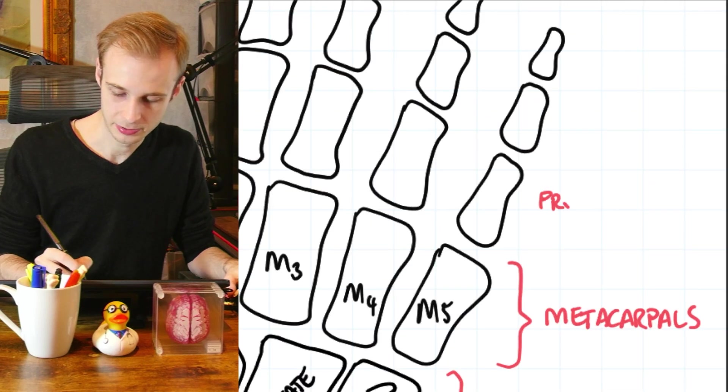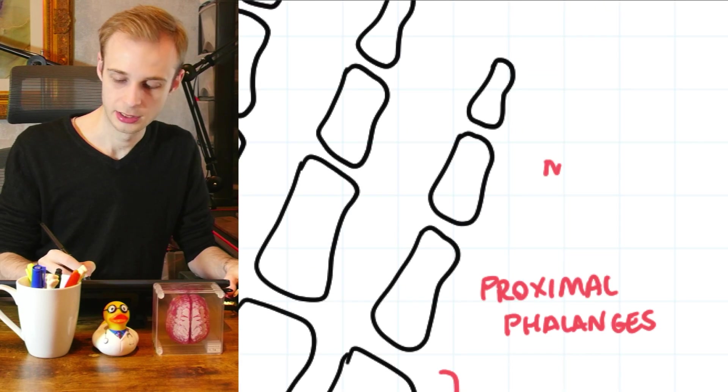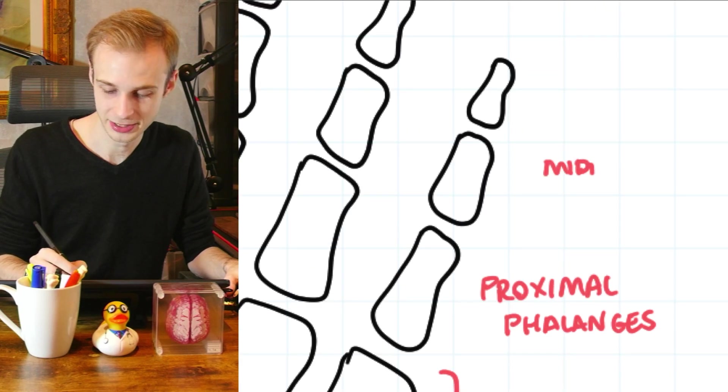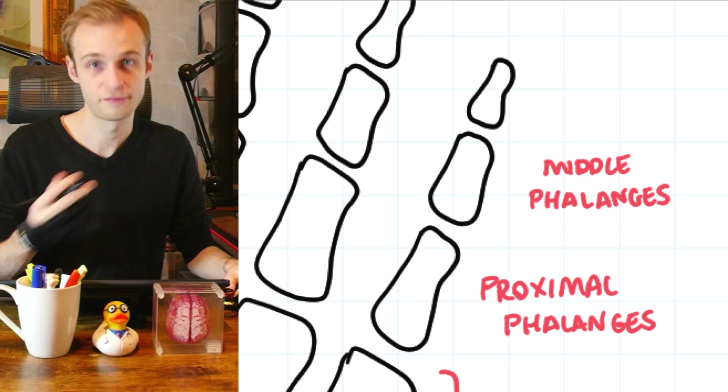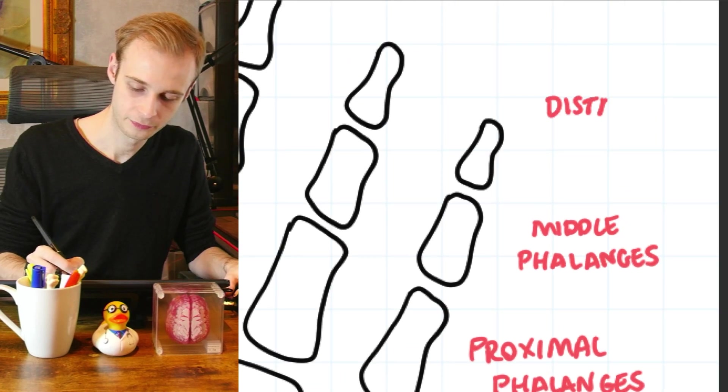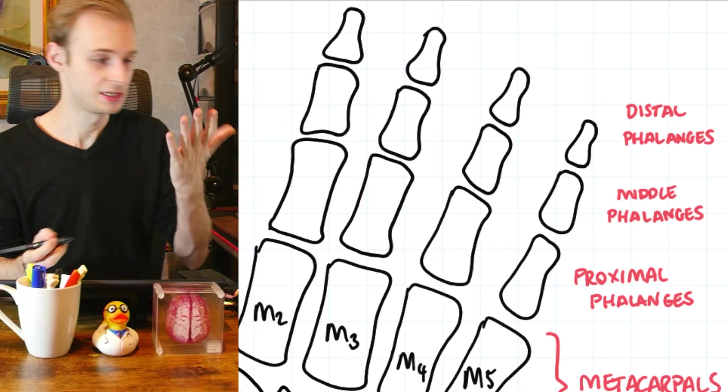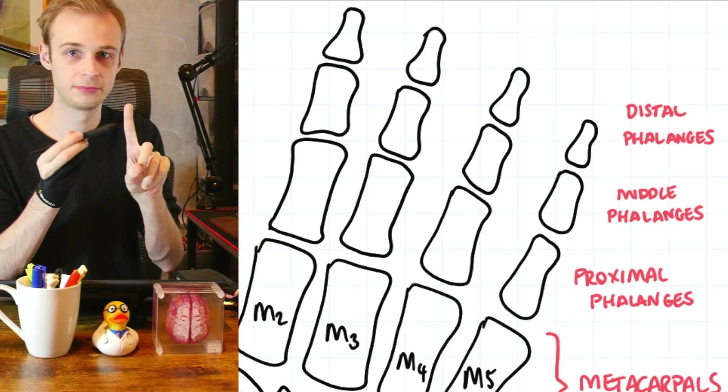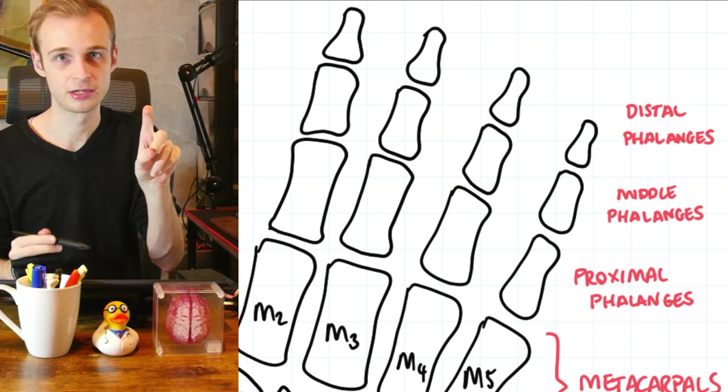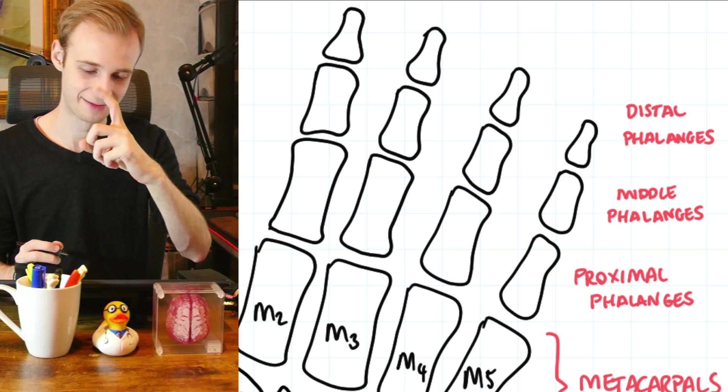So let's label these up. So we have the proximal phalanges in the middle. We have the middle phalanges or singular phalanx if you're talking about one of them. And then up here furthest away we have the distal phalanges. You can obviously find these on yourself. Proximal, middle, distal. And you can see that they separate when we flex the finger. Probably easier to see if I do it from that angle for the camera.